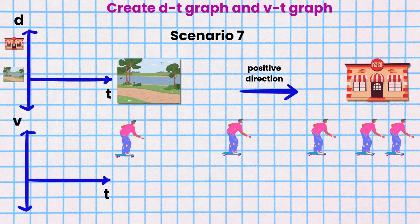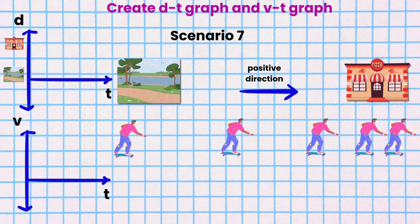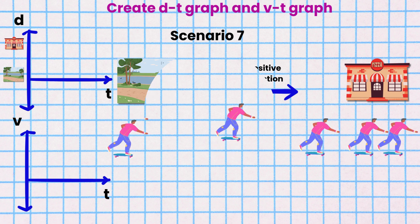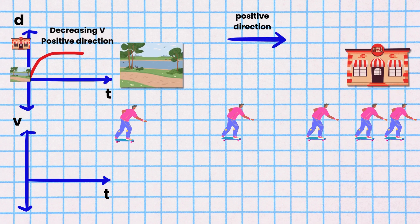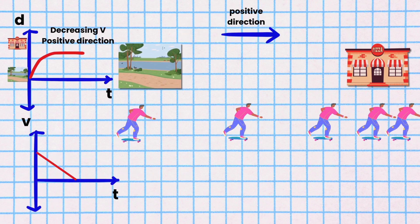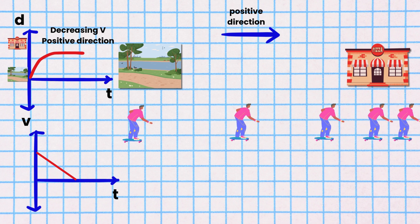Scenario 7. Isaac is skateboarding from the park to the pizzeria. He has a decreasing velocity in the positive direction. The DT graph is a curve that gets flatter in the positive direction. The VT graph would be a line with a negative slope in the positive quadrant above the time axis.